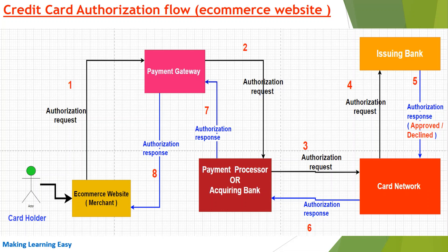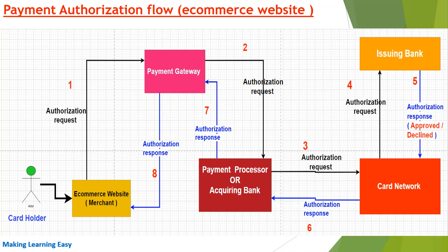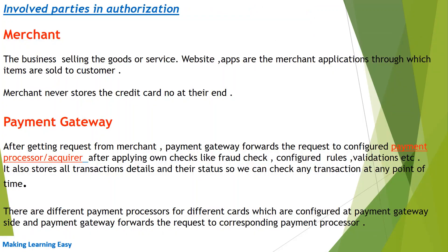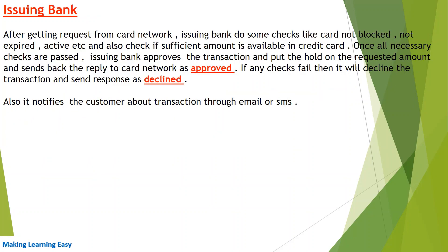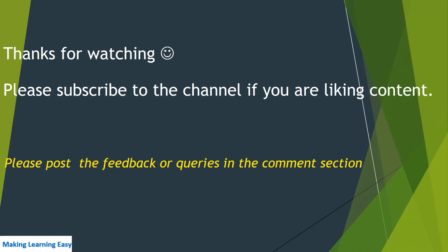The example given is for an e-commerce website, but the core concept of payment authorization is the same across any channel. One important point: the customer enters credit card number, CVV number, and billing address on the website, but the merchant does not store any sensitive information like the credit card number or CVV. It simply forwards the request to the payment gateway with those fields. The five parties involved are: merchant, payment gateway, payment processor, card network, and issuing bank.